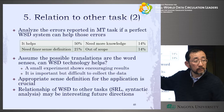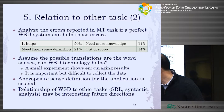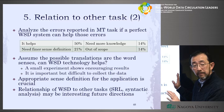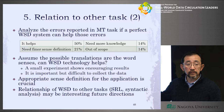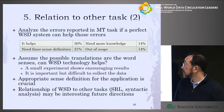They also discuss the relationship of word sense disambiguation to other tasks — semantic role labeling and syntactic analysis may be interesting future directions. This function is a very important semantic problem.